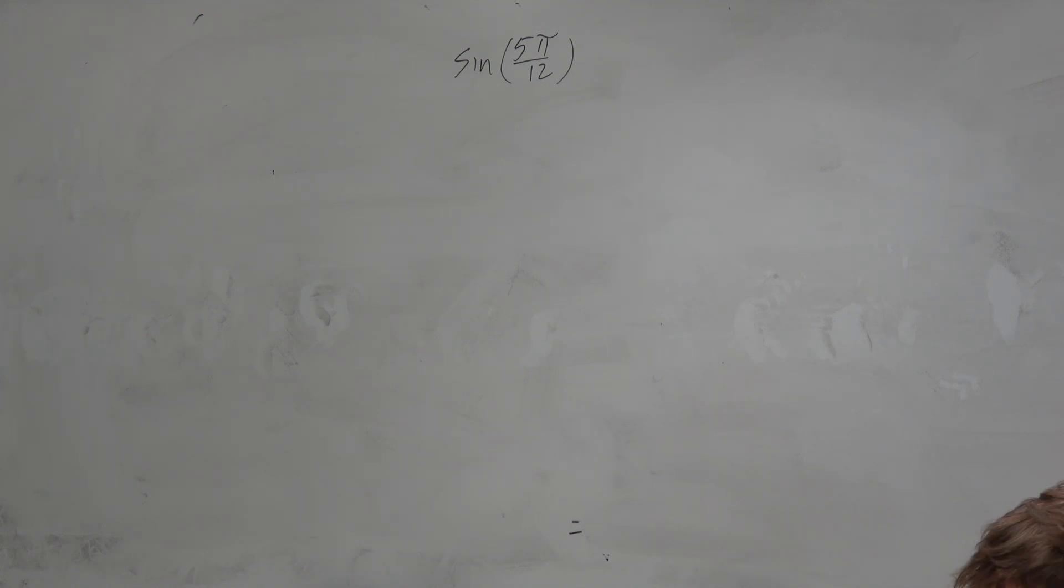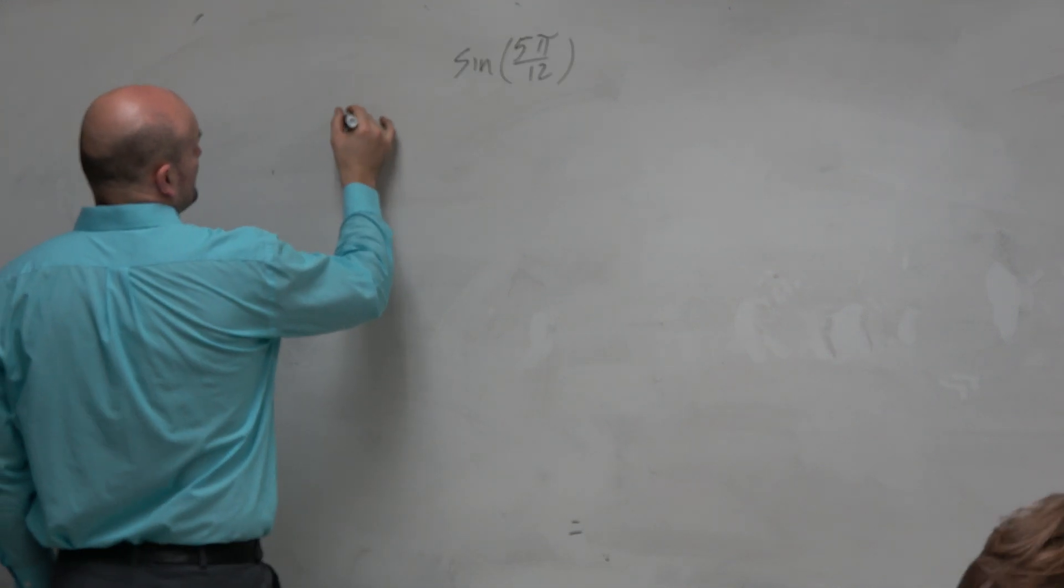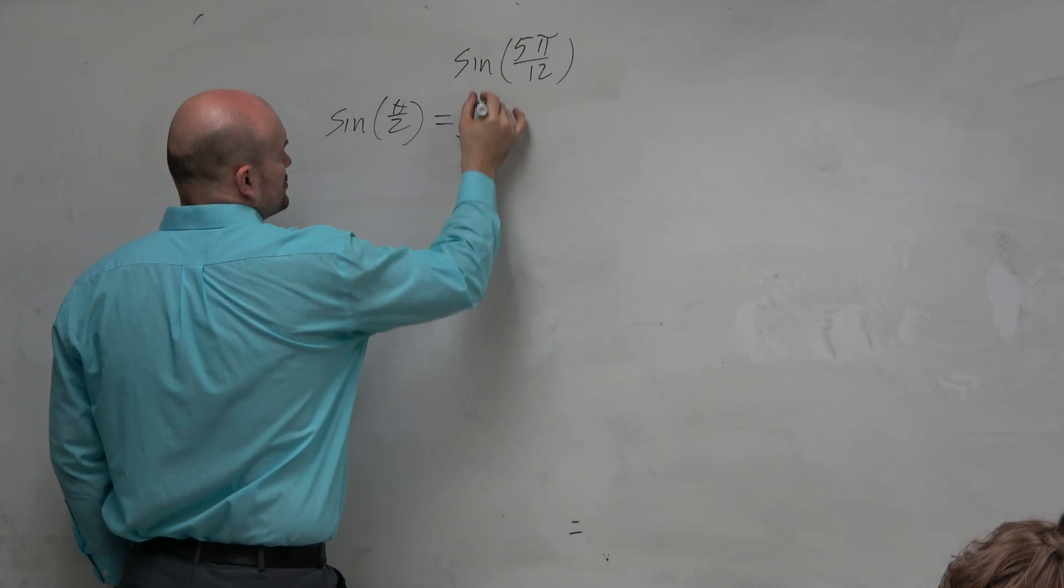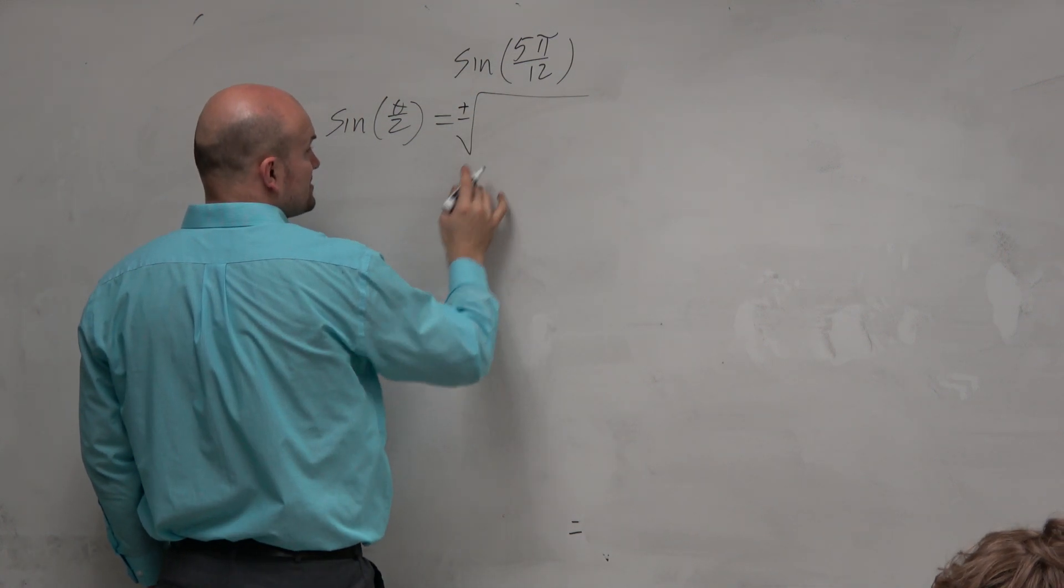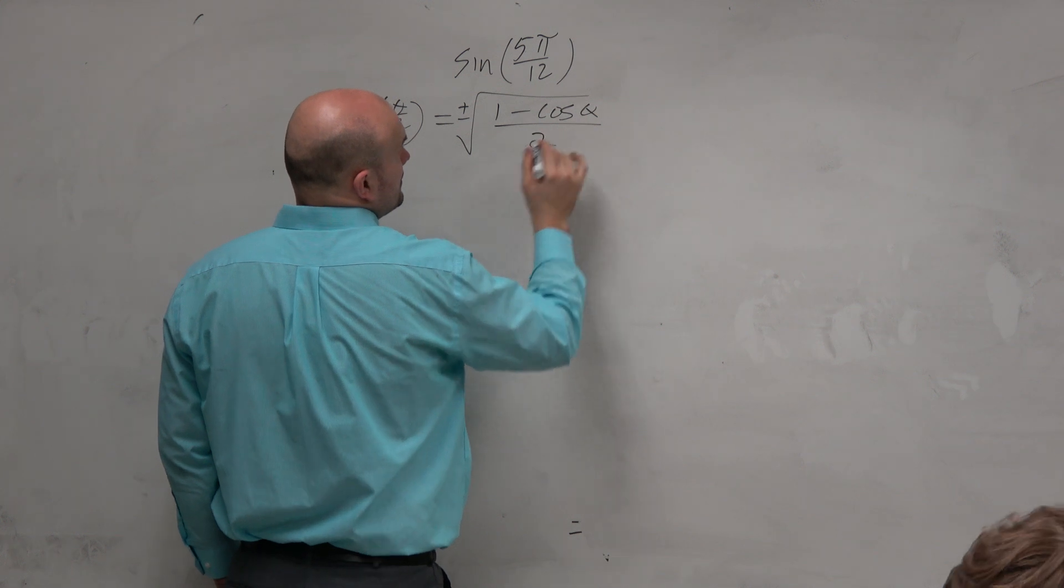So in this example, we see the half angle identity for sine. Sine of theta divided by 2 is equal to the square root, plus or minus, of 1 minus cosine of theta, divided by 2.